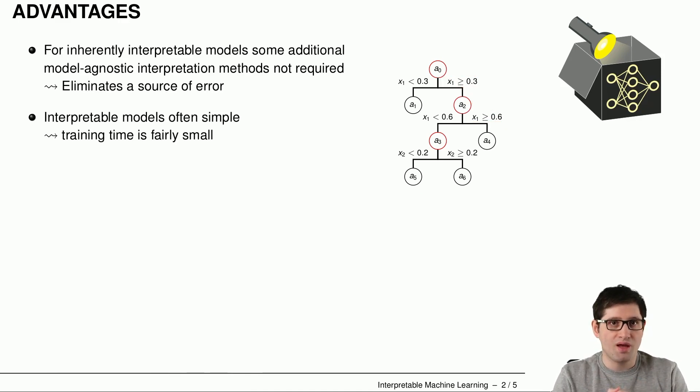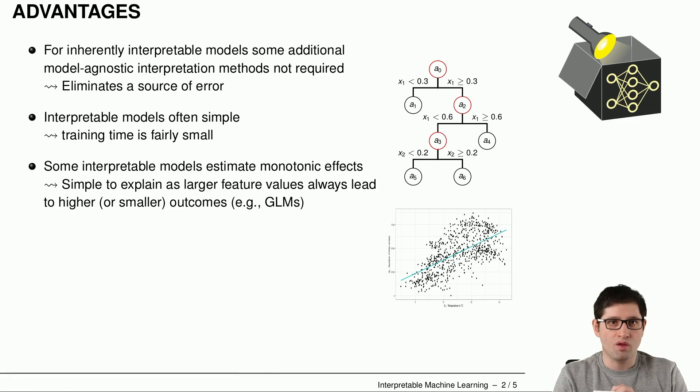Another advantage of interpretable models is that they are usually computationally really fast. So we can train them pretty fast. And another nice thing is that interpretable models like linear models and generalized linear models, they kind of estimate monotonic effects. And here we can see that this line is monotonic increasing, which is the effect of the temperature with respect to the number of bike rentals here.